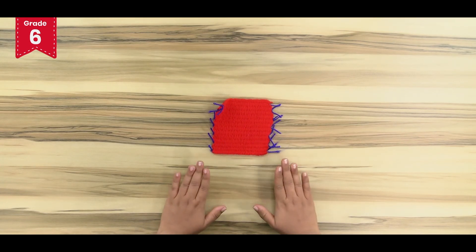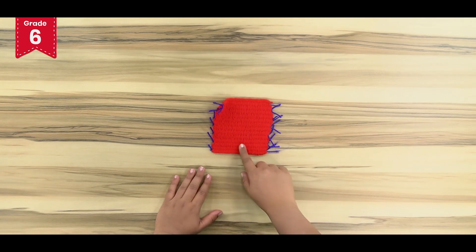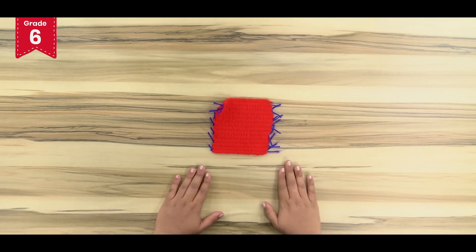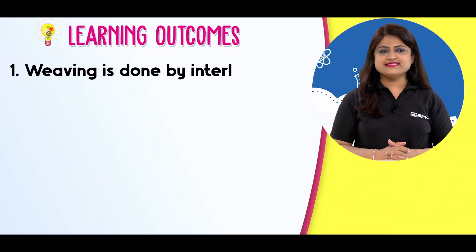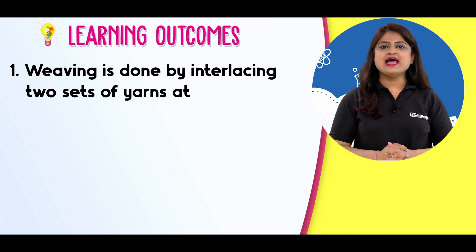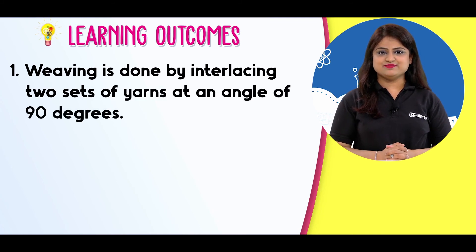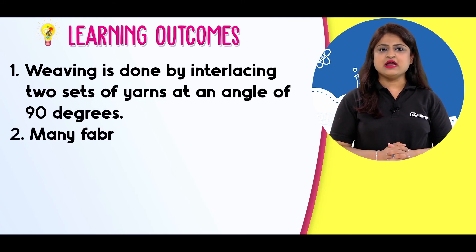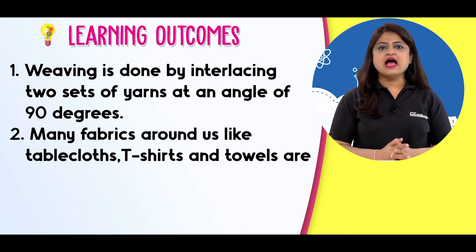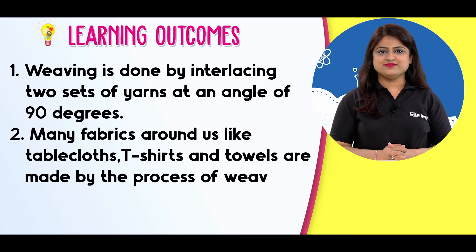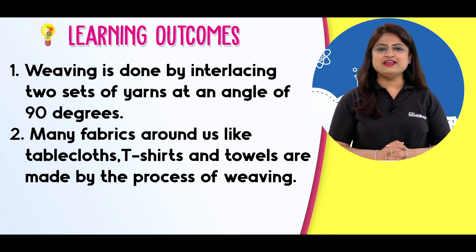In a similar manner, you can use the weaving process with different colored threads to prepare different types of fabrics. Weaving is done by interlacing two sets of yarns at an angle of 90 degrees. Many fabrics around us like tablecloths, T-shirts and towels are made by the process of weaving. Visualize science with IntelliBrain and fall in love with learning.